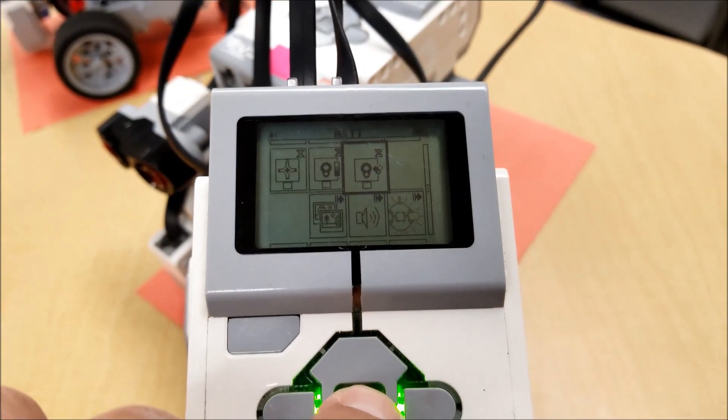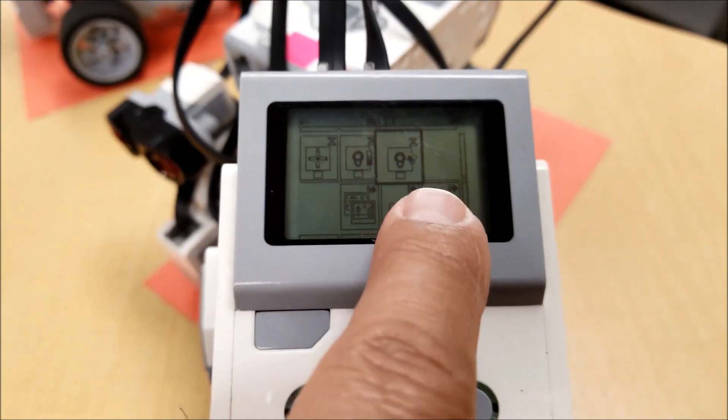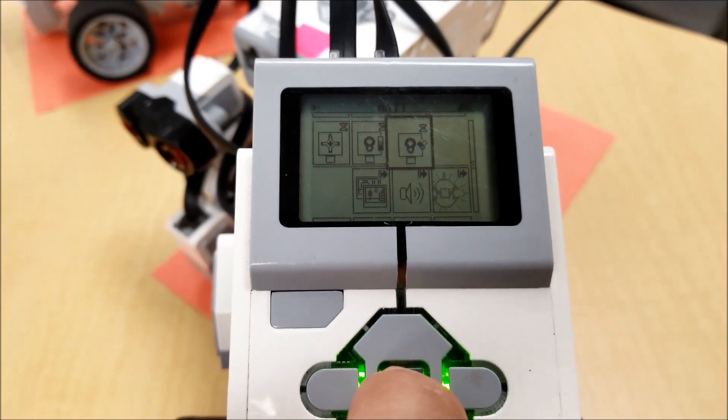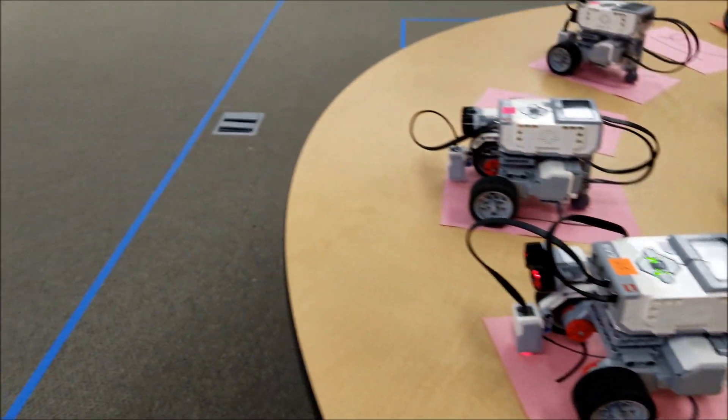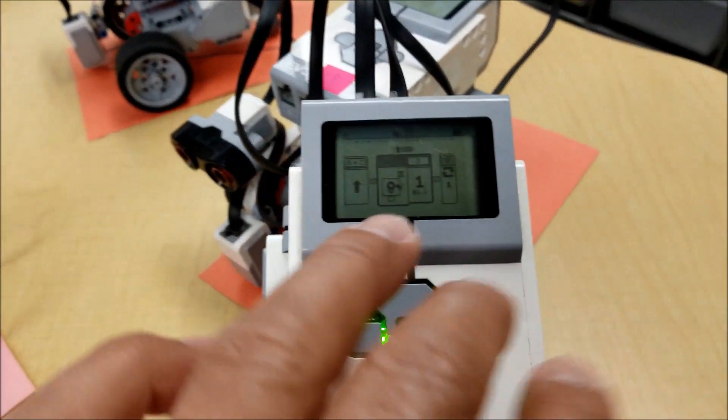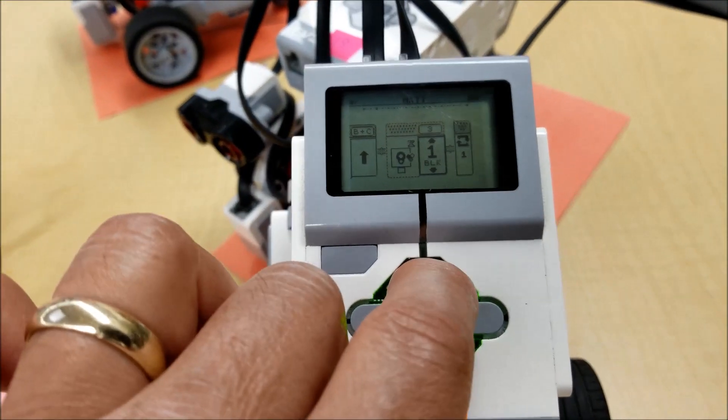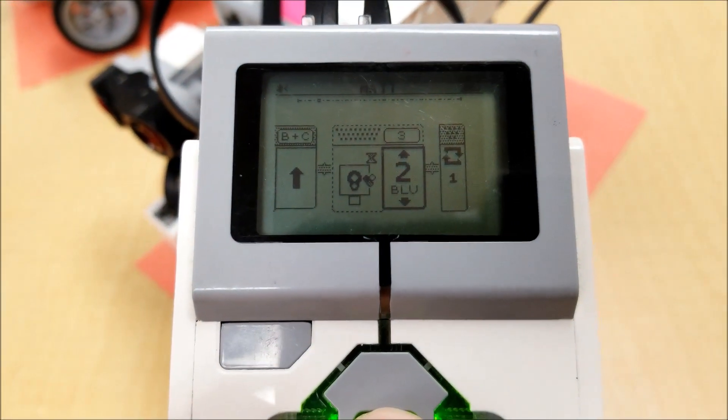So we're going to go to the right and up, and we're just going to go ahead and add this. Now there's two color sensor blocks. We're going to choose the one that actually lets us choose a color. Now, obviously the tape on the floor is blue, so I want to change this to blue. So there's blue right there.